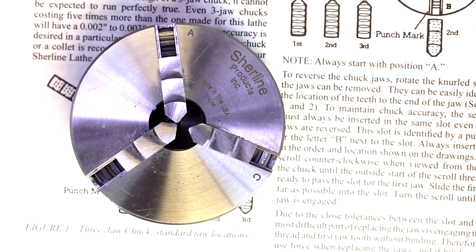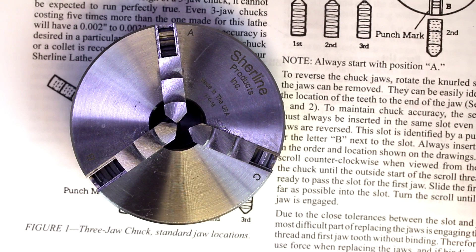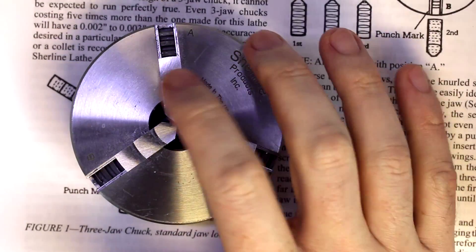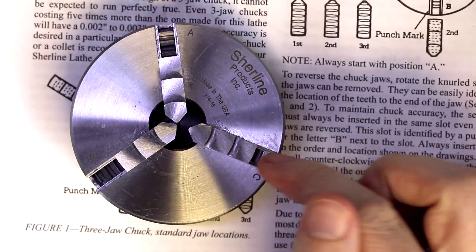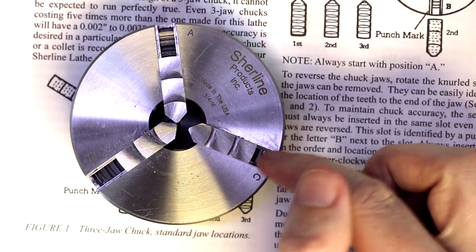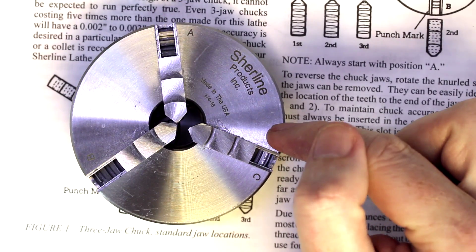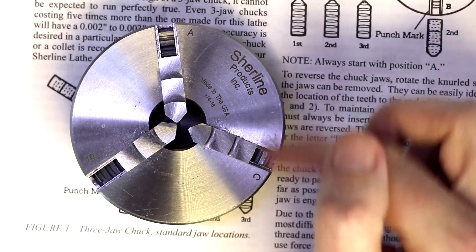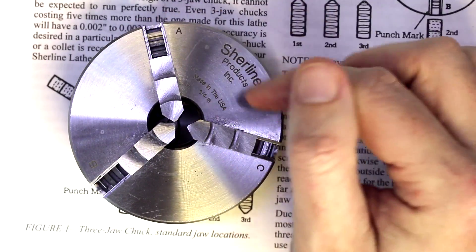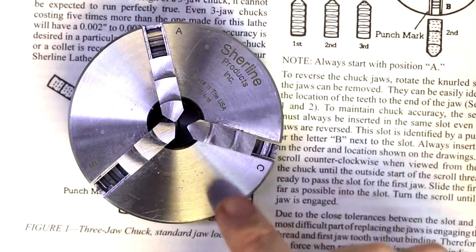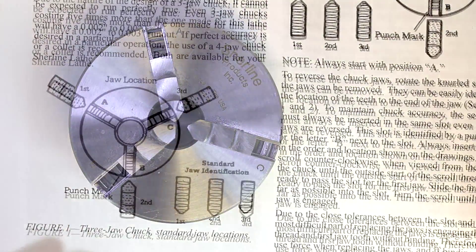So here is one other example of misalignment. In this case, I have put all the correct jaws in their correct slots. But the C jaw, I ended up moving the scroll past and catching it on the second round. So you've got to make sure that you catch that first starting thread at the correct time as well. Otherwise you'll end up with a situation like this.